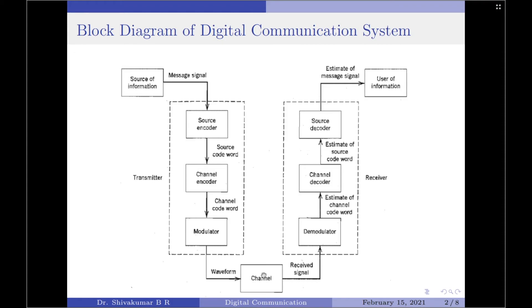The communication channels only have a finite bandwidth and non-ideal frequency response. The signal often suffers amplitude as well as phase distortion as it travels over the channel. Also, the signal power decreases due to the attenuation of the channel. Sometimes the signal is corrupted by unwanted unpredictable electrical signals which are commonly referred to as noise. The important parameters of the channel are signal-to-noise power ratio, usable bandwidth, amplitude and phase response, and the statistical properties of noise.